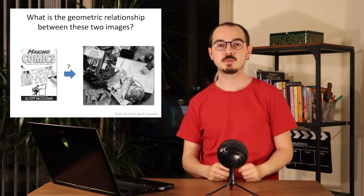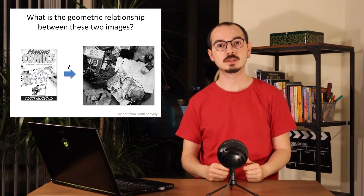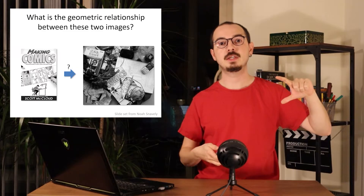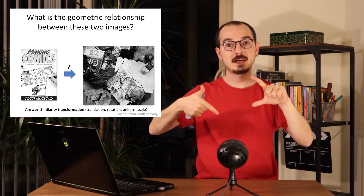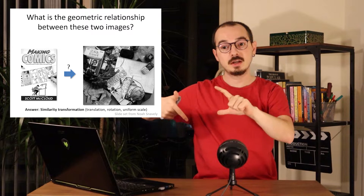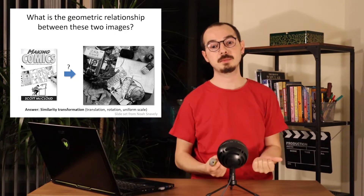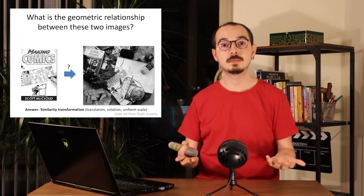Hello everyone and welcome to our lecture on image transformations and alignment. We know by this point how to detect features, how to describe them, and how to match them. So let's try to find the relationship between any two images after matching these features. When we look at the book cover on the left, we can see that we need to do some rotation, some scaling, and some translation to fit it in the second image. This is called a similarity transformation.